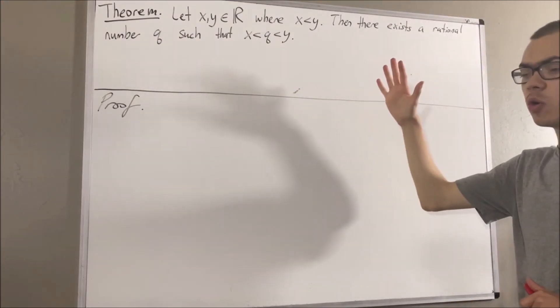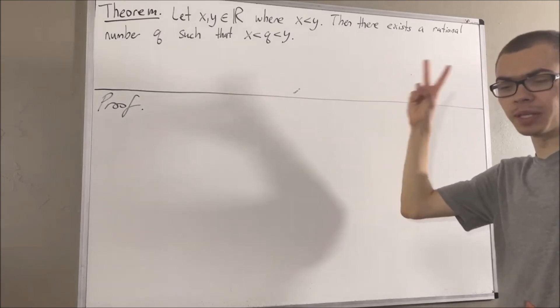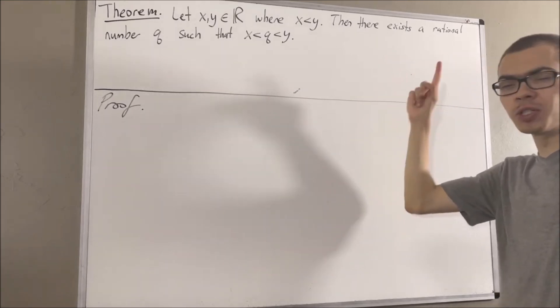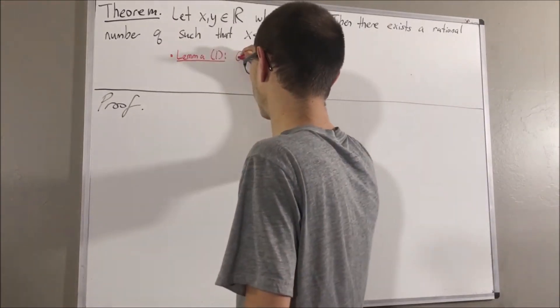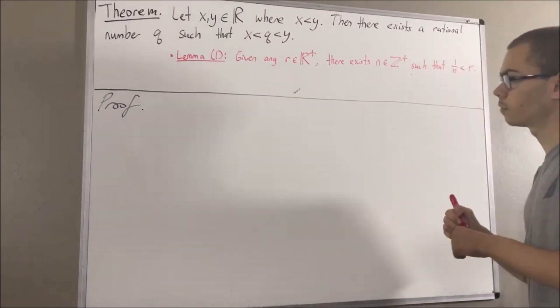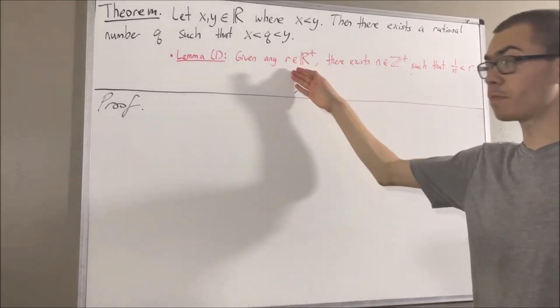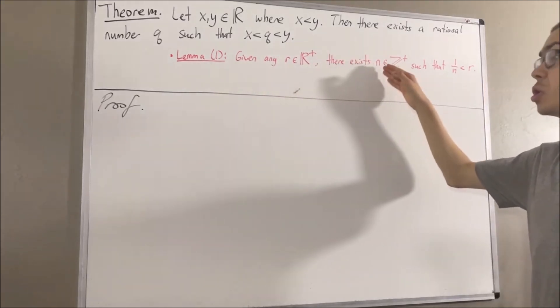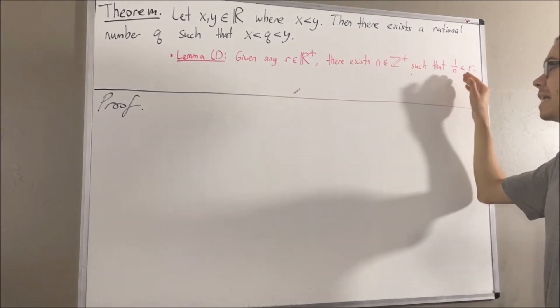Now, in proving this theorem, we are going to use two preliminary results. Here's the first one. Given any positive real number r, there exists a positive integer n such that 1 over n is less than r.